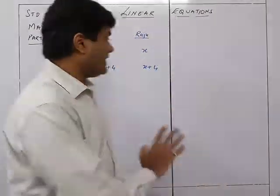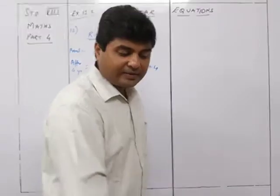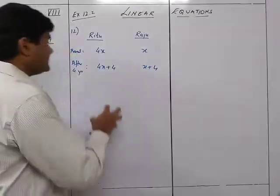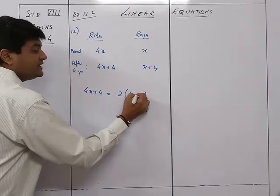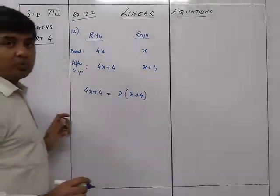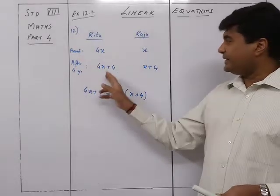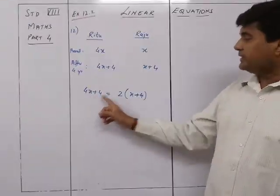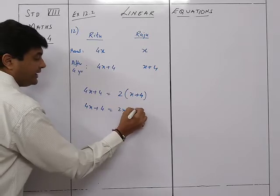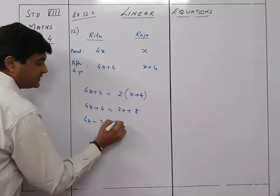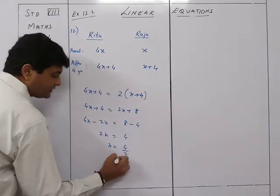It is given that after four years her age will be twice Raju's age. So the equation is: 4x + 4 = 2(x + 4). Solving: 4x + 4 = 2x + 8, so 4x minus 2x = 8 minus 4, giving 2x = 4, therefore x = 2.